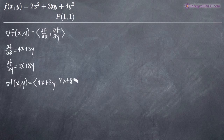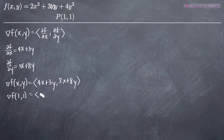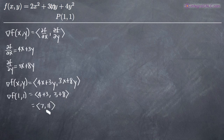To find the direction, we plug in the point p = (1, 1). Substituting x = 1 and y = 1: the first component is 4(1) + 3(1) = 7, and the second component is 3(1) + 8(1) = 11. So the gradient vector at p is (7, 11), and this is the direction in which the maximum directional derivative occurs.